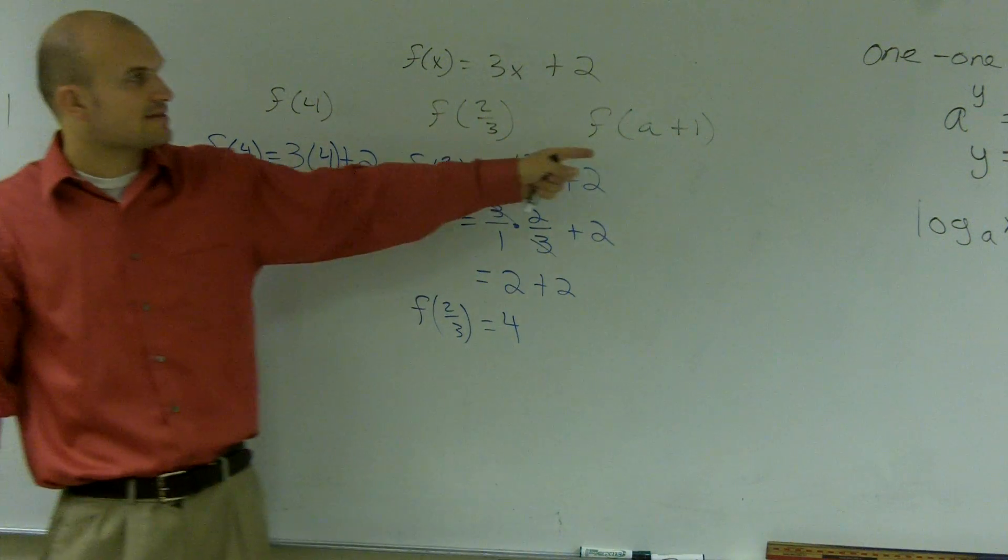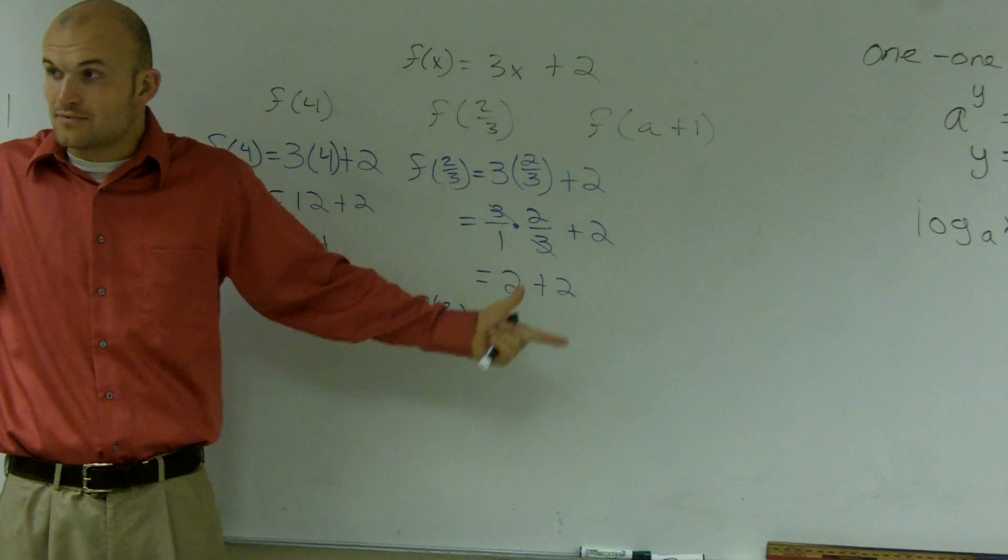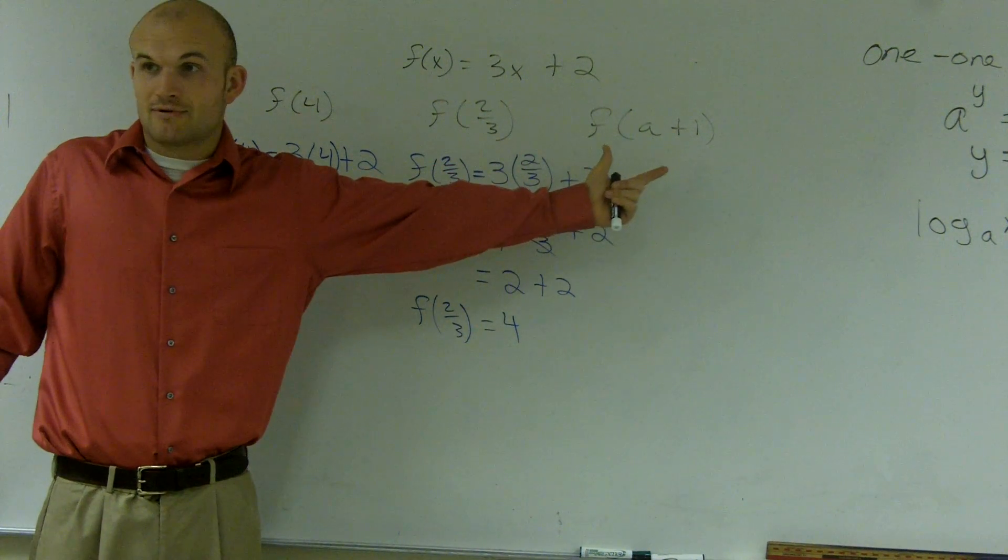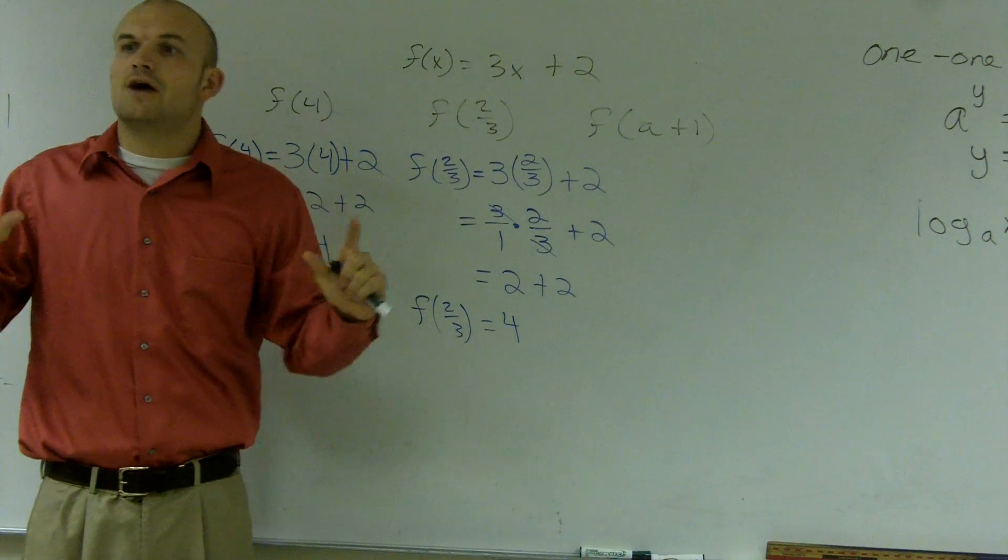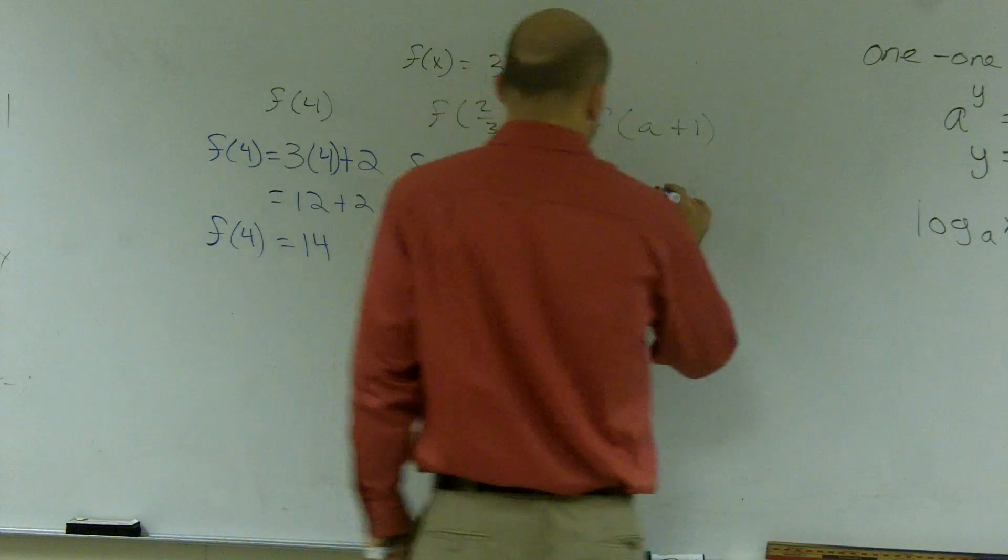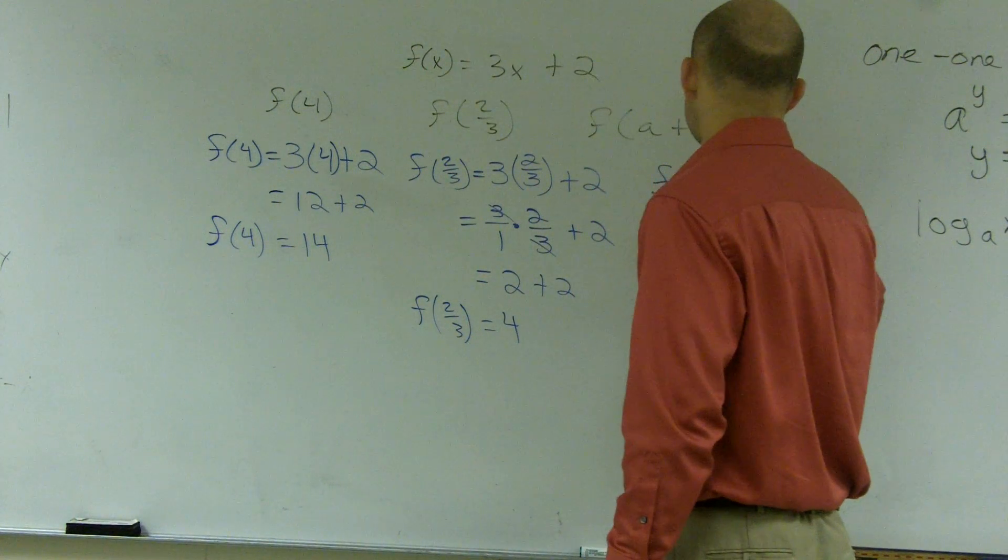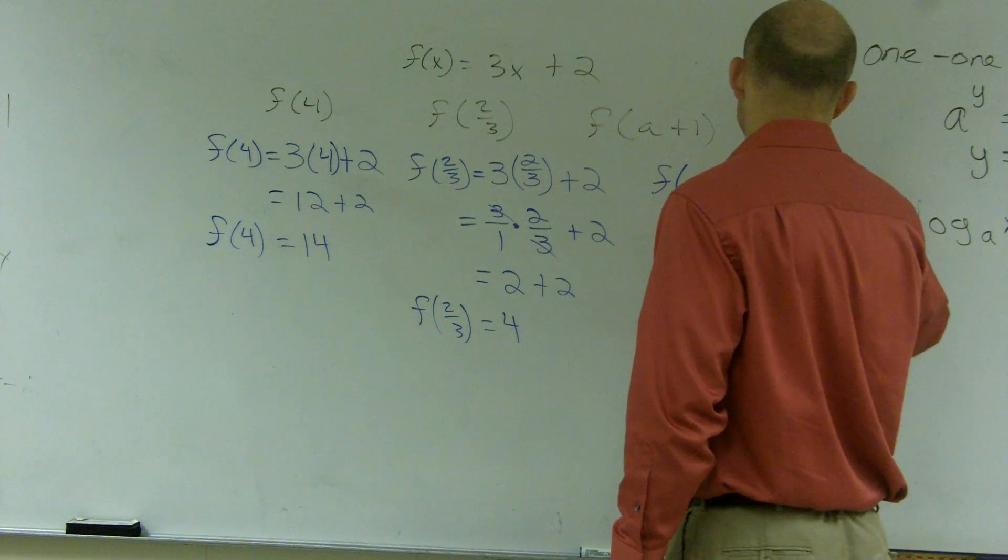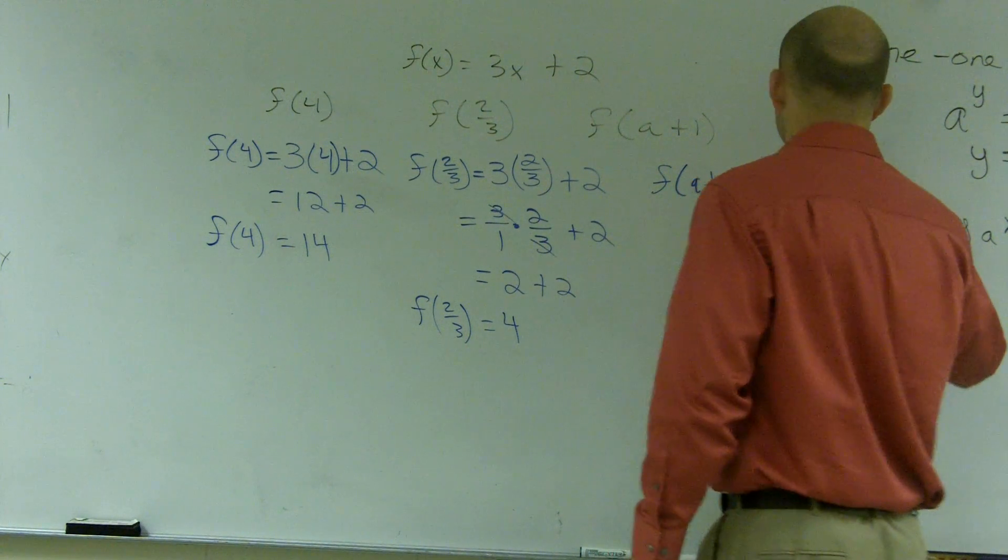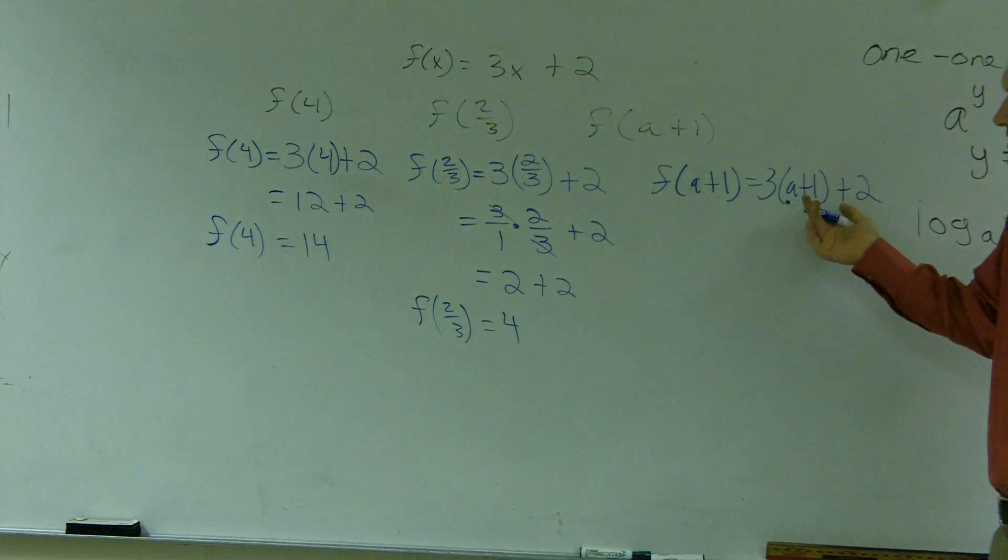Last one, now it says evaluate the function for f of a plus 1. Crap, there's two numbers in that one, right? It's okay. Just follow the exact same steps. f of a plus 1 equals 3 times a plus 1 plus 2. Now, what do I do here?